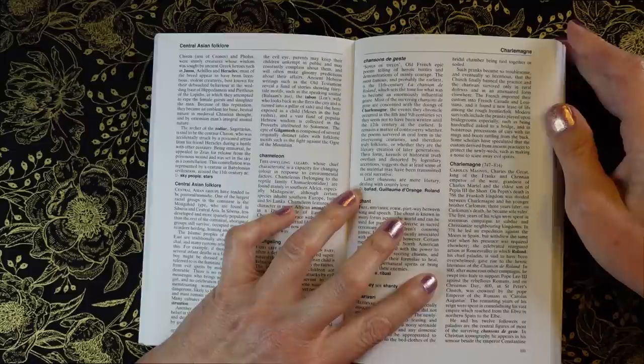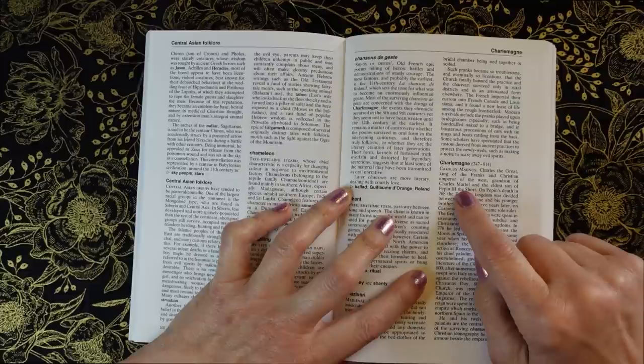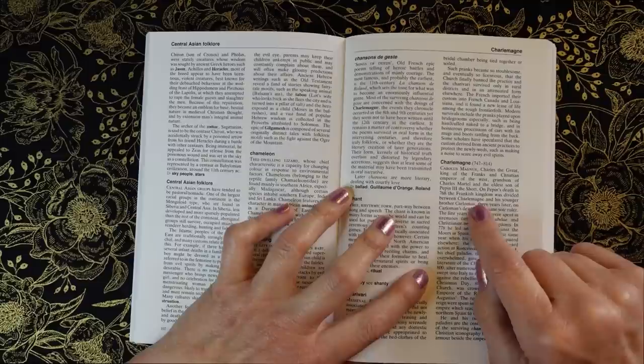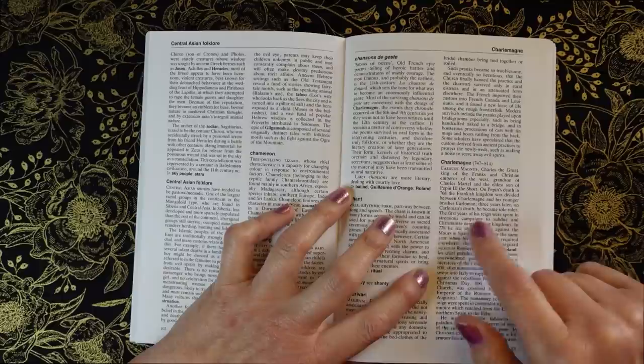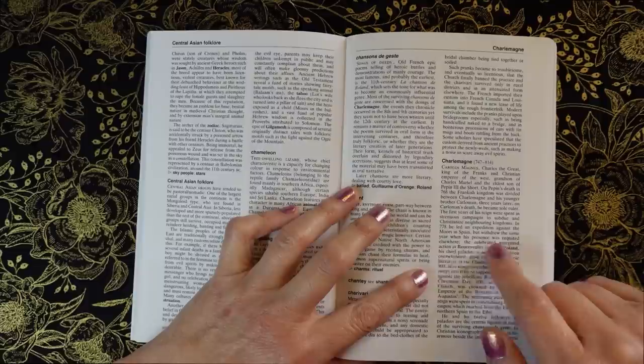Charlemagne 747-814, Carolus Magnus, Charles the Great, King of the Franks and Christian Emperor of the West, grandson of Charles Martel and the eldest son of Pepin III the Short. On Pepin's death in 768, the Frankish kingdom was divided between Charlemagne and his younger brother, Carloman. Three years later, on Carloman's death, he became sole ruler. The first years of his reign were spent in strenuous campaigns to subdue and Christianize neighboring kingdoms.